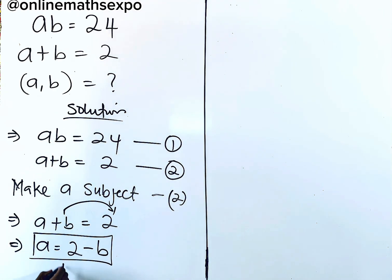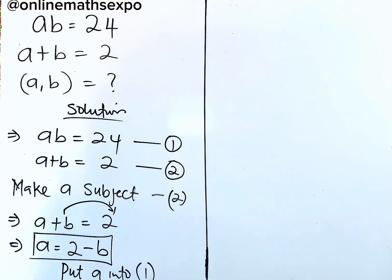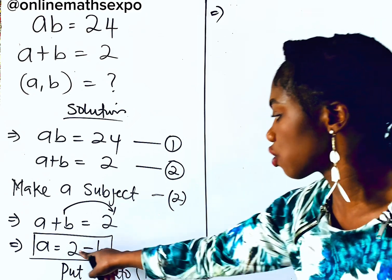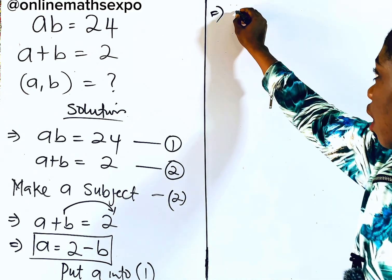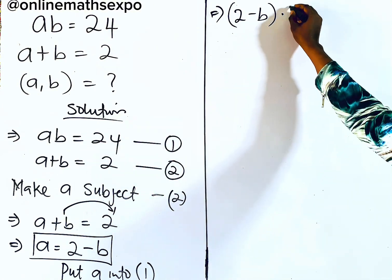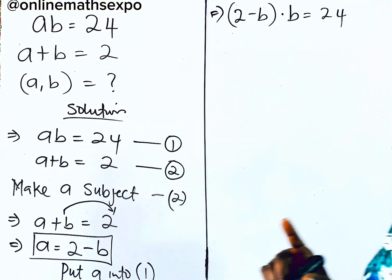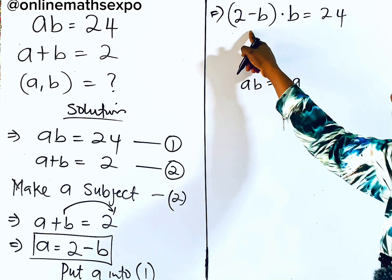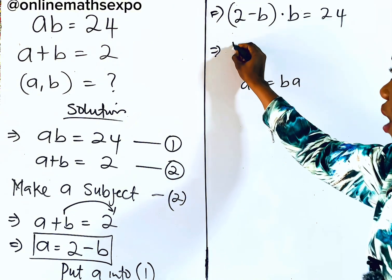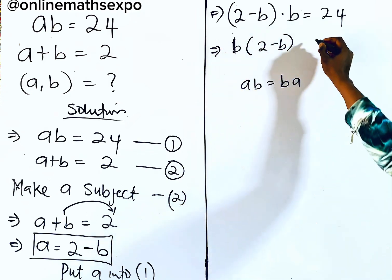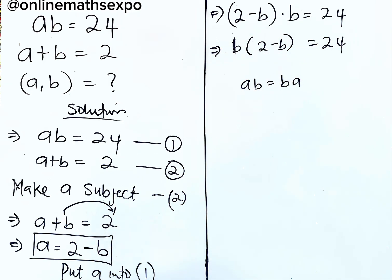Now we use this value of a and substitute it into equation 1. So we put a = (2 - b) into equation 1. This gives us (2 - b) × b = 24. Remember, ab is the same as ba, so (2 - b) multiplied by b is the same as b multiplied by (2 - b). This equals 24.